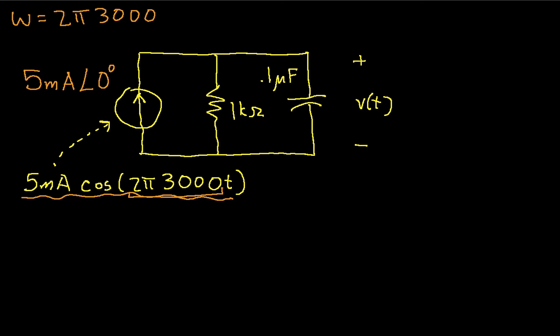And at the same time, we'll get rid of this time signal V of t. V of t is the voltage that we want to find, and we'll replace it by a capital V, which represents the phasor voltage that we're going to find. So that ends step one of replacing the voltages with phasors.